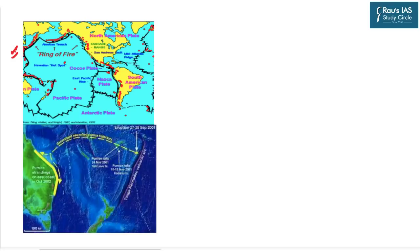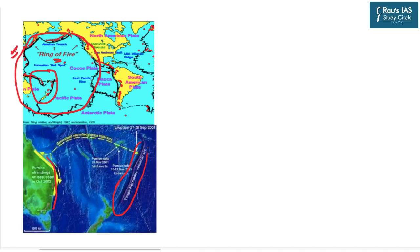The Tonga region lies along the Pacific coast, which is known as the Ring of Fire. This Ring of Fire indicates that throughout this region there is intense volcanic activity, due to convergent plate boundaries along the coast of the Pacific. The Tonga region lies near New Zealand and is part of the Tonga-Kermadec Volcanic Arc.